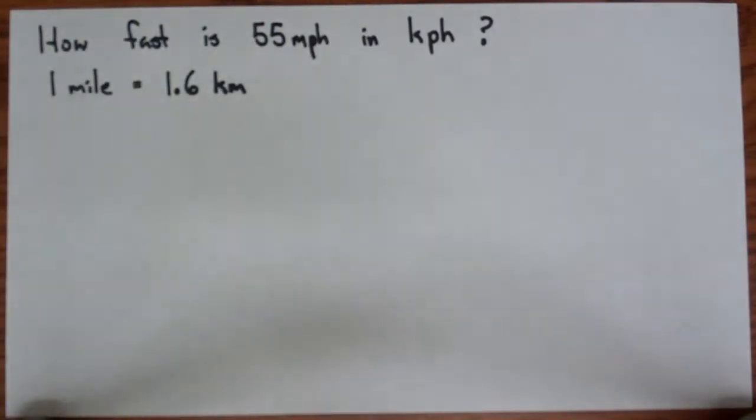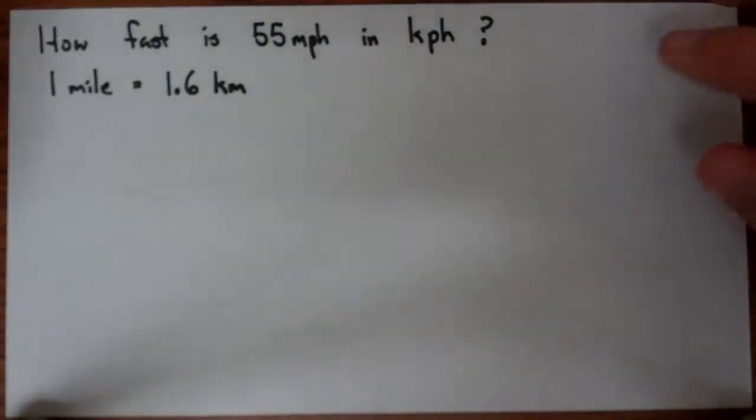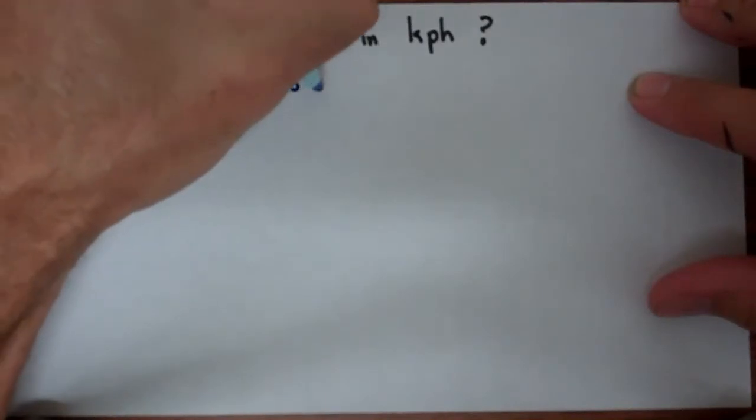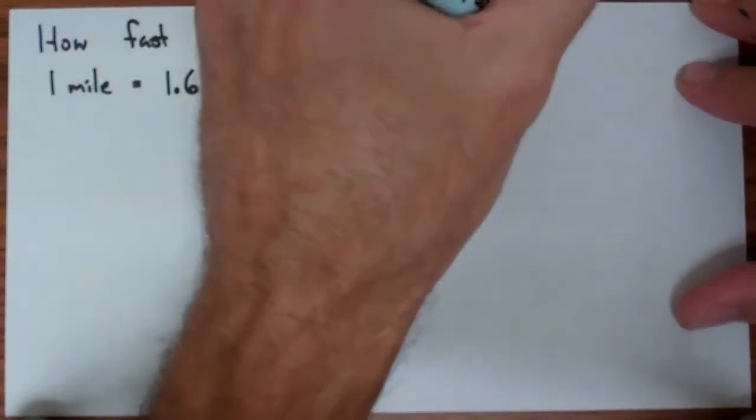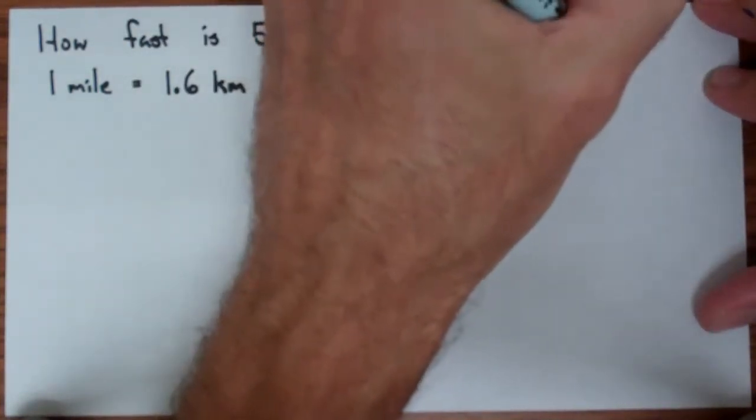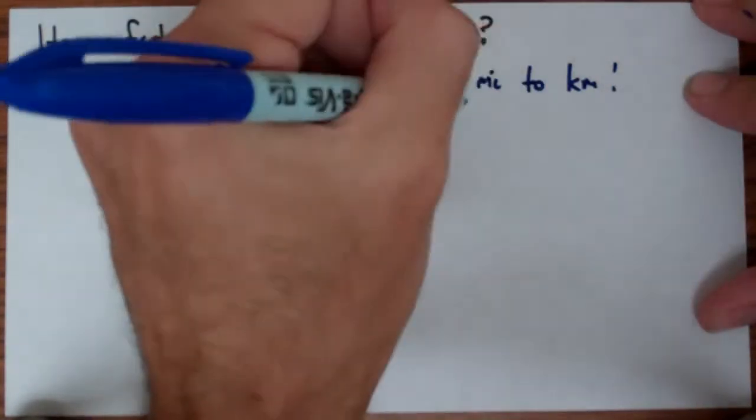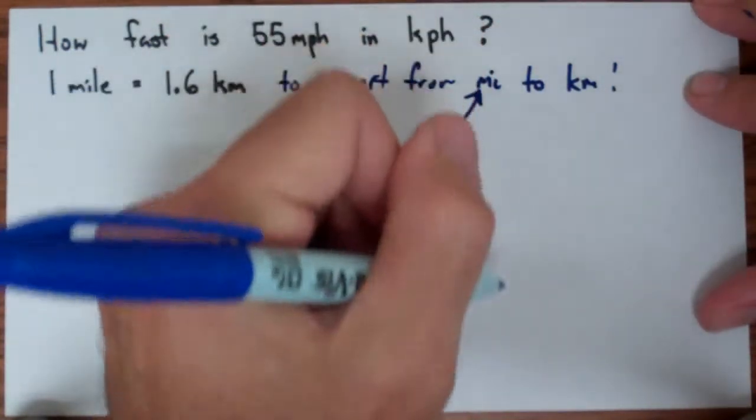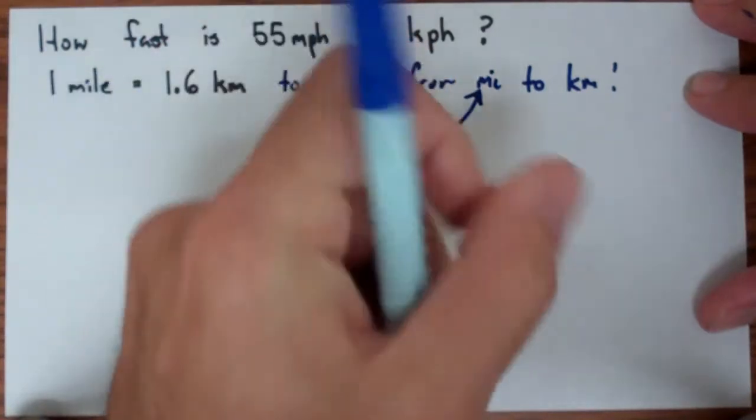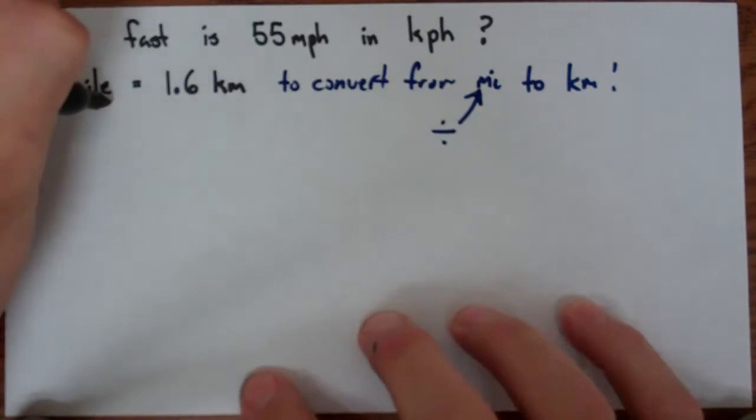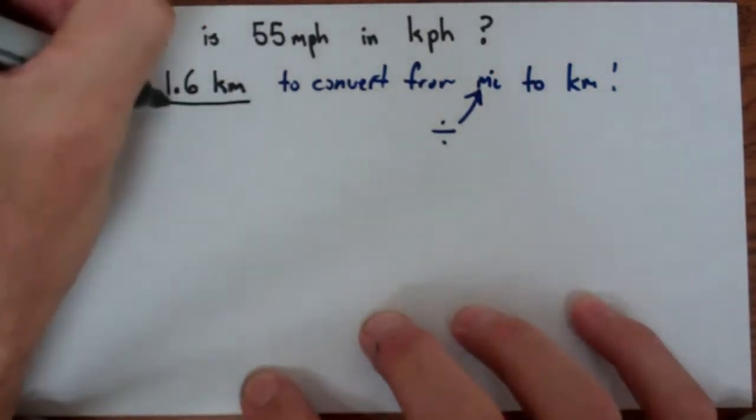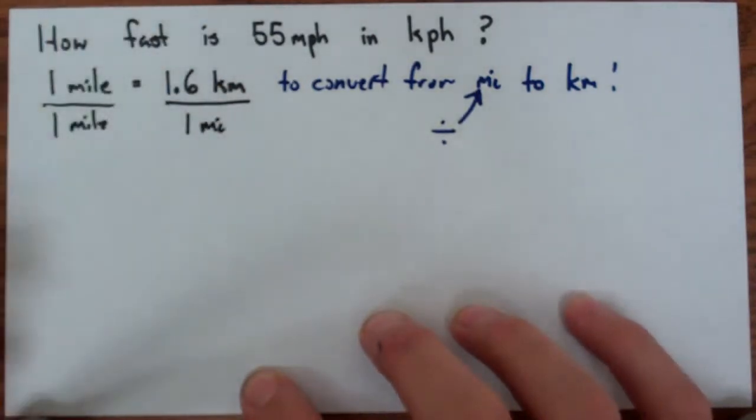So basically what we want to do is to convert from miles to kilometers. This is our objective, and so because this is the unit we want to go away, this is what we're going to divide by. So I'm going to go ahead and divide by 1 mile, and divide by 1 mile.